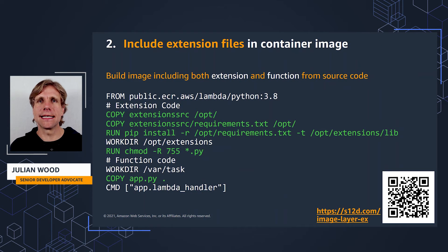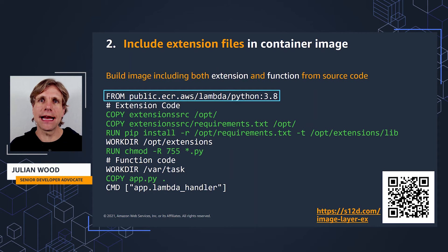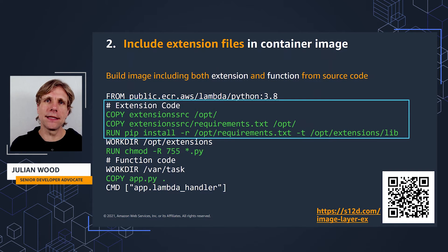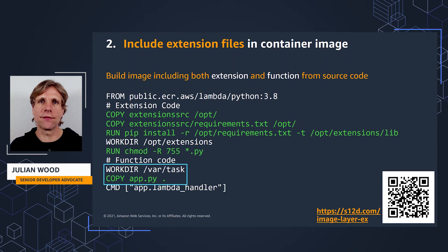As Lambda layers and extensions are simply files, if you have the code you can include the extension files in the container image. This example includes both the extension files and function files in a single container image. It's a Python Lambda function using the Lambda-provided runtime, and also a Python extension — not a compiled binary. It copies the extension files, does a pip install of the extension's requirements, sets the extension files as executable, and then copies the Lambda function code into the image. This creates a self-contained image containing the extensions and the function.